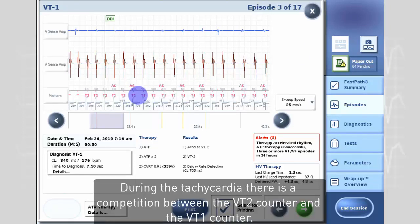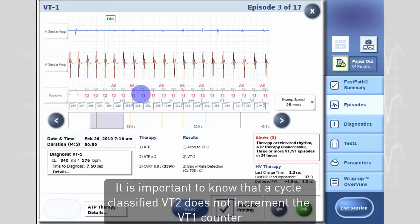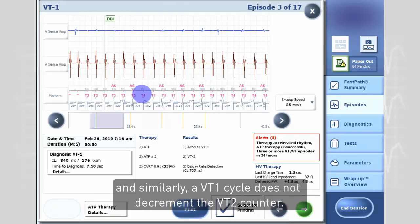During the tachycardia there is a competition between the VT2 counter and the VT1 counter. It is important to know that a cycle classified VT2 does not increment the VT1 counter, and similarly a VT1 cycle does not decrement the VT2 counter.